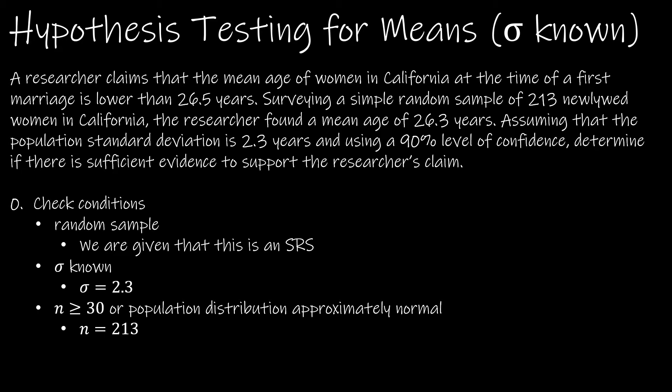So as I'm looking at this, I should be writing down that I'm assuming the mean is going to be 26.5 years and the mean that was found was 26.3 years. Assuming the population standard deviation is known to be 2.3 years and using a 90% level of confidence.